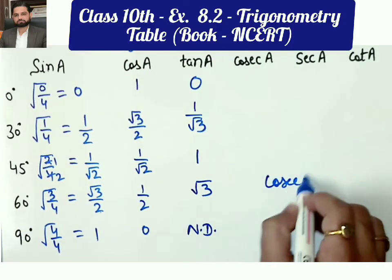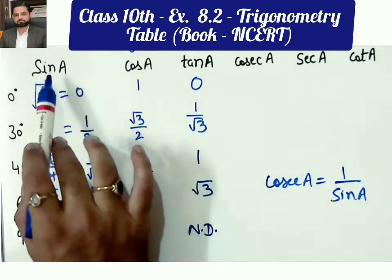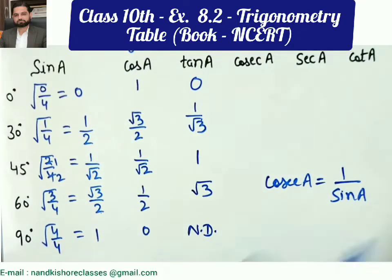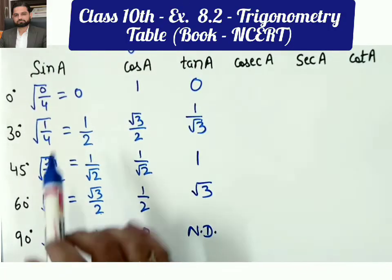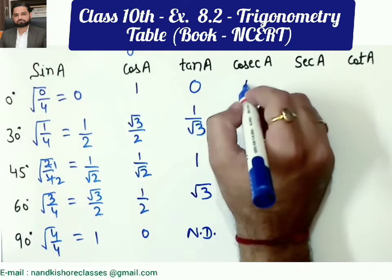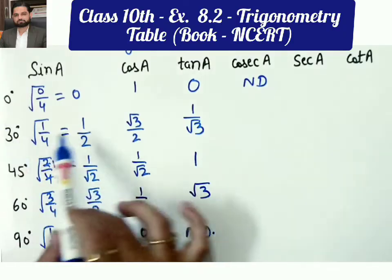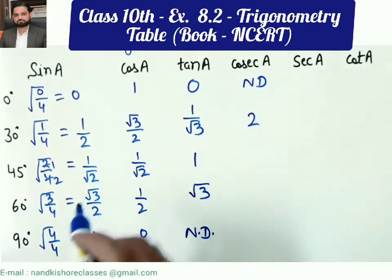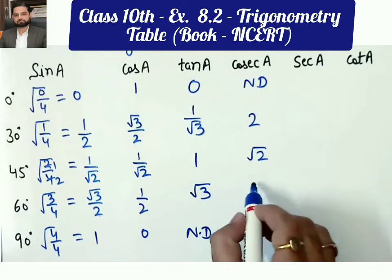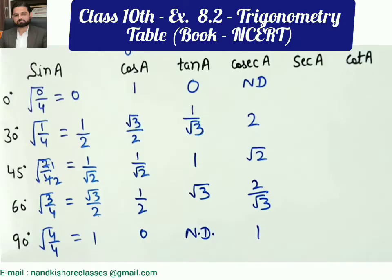The next three columns are easy because cosecant A is the reciprocal of sine A, secant A is the reciprocal of cosine A, and cotangent A is the reciprocal of tangent A. For cosecant: reciprocal of 0 is not defined; reciprocal of 1/2 is 2; reciprocal of 1/√2 is √2; reciprocal of √3/2 is 2/√3; and reciprocal of 1 is 1.